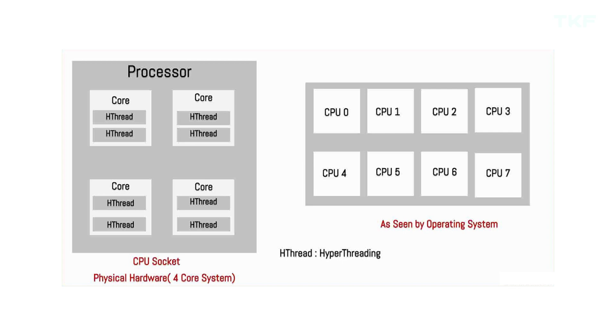So with Hyperthreading support: 4 cores gives 8 threads, 6 cores gives 12 threads, 8 cores gives 16 threads, 12 cores gives 24 threads, and so on. With Hyperthreading, a core can effectively handle two different tasks. Core count and Hyperthreading are both important for multitasking, for example in content creation or editing.